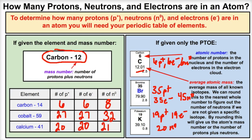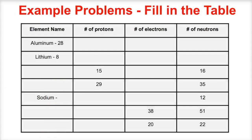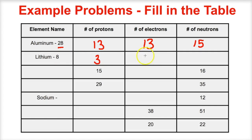Now let's look at some practice problems — pause the video and try to solve these before I do. Aluminum-28: aluminum is number 13, so 13 protons, 13 electrons, and 28 minus 13 equals 15 neutrons. Lithium-8: lithium is number 3 — 3 protons, 3 electrons, and 8 minus 3 equals 5 neutrons. For the next one with 15 protons and 16 neutrons, number 15 on the periodic table is phosphorus.